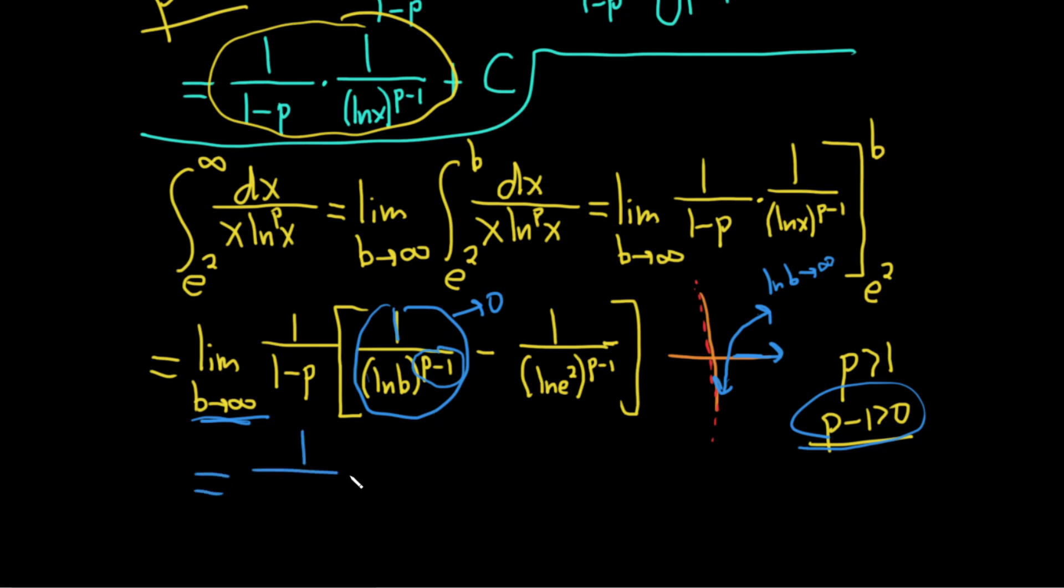So we're left with 1 over 1 minus p, 0 minus, and then the natural log of e squared is 2. Remember, if you have the ln of e to the x, that's x. This is a really cool color. I've never used it before. I'm going to switch, though. And so this is 1 over 2, and it's to the p minus 1. Let's clean it up.